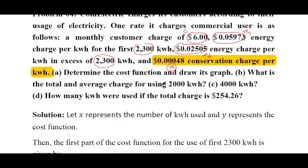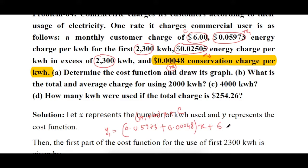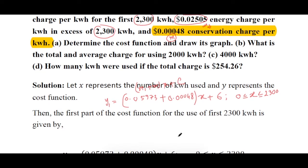The first cost function is y1 = (m1 + m)x + c, where m1 = 0.05973, m is the conservation charge = 0.00048, and c is the fixed cost. This function is valid when kilowatt hours are from 0 to 2300.